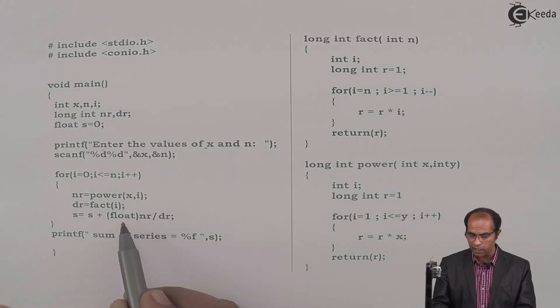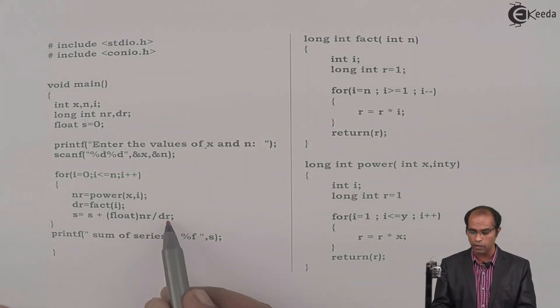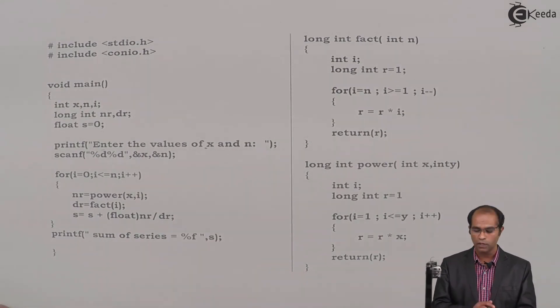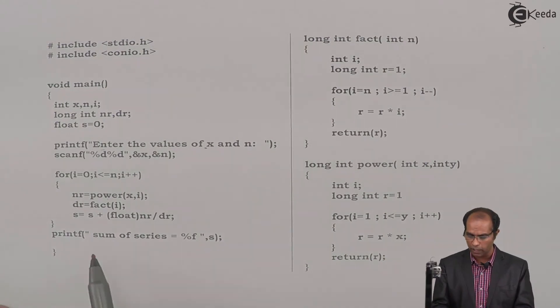So typecast this nr to float, divide that particular float value by long int, and then the resultant value is float itself. Keep on adding that with s, and s is initialized to zero. Finally, we'll display the sum at this particular place.